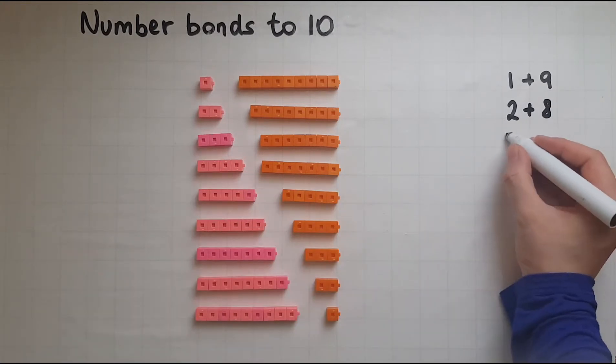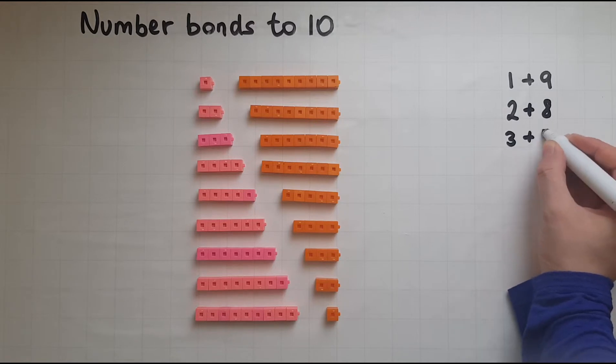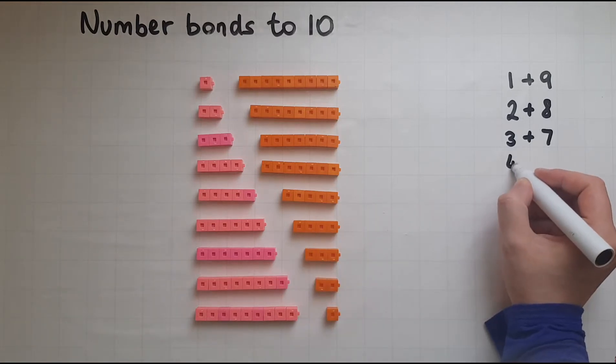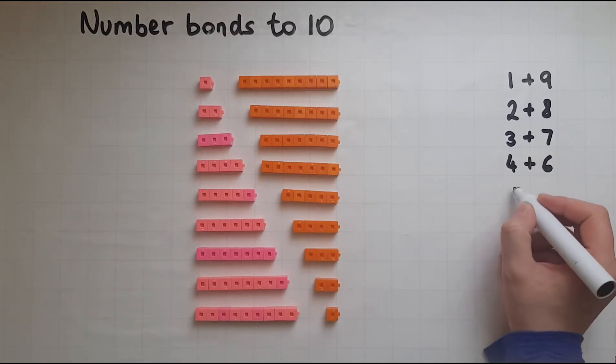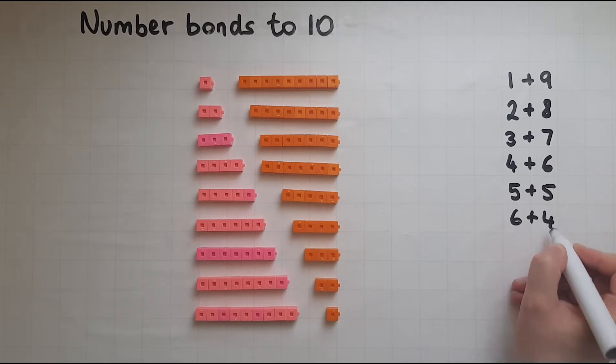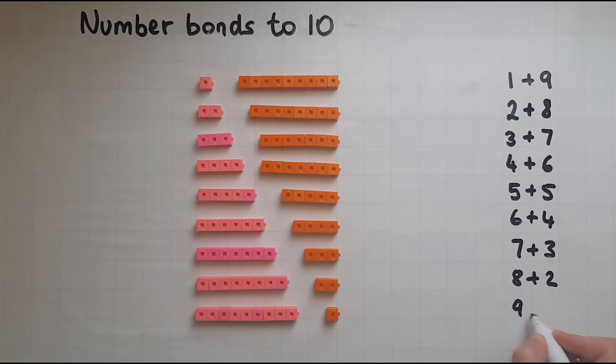3 plus 7. So 3 and 7 are two number bonds to 10. 4 and 6. 5 and 5. 6 and 4. 7 and 3. 8 and 2. 9 and 1.